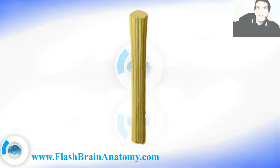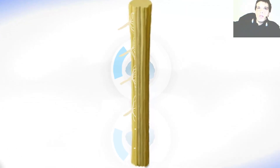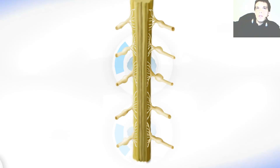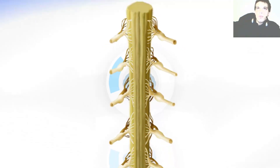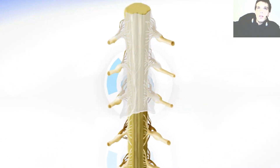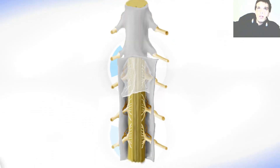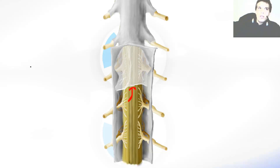Here we see the dorsal view of the spinal cord. As I mentioned, the dorsal roots of the spinal nerve come out of the dorsolateral sulcus — we cannot see the sulcus from this dorsal view. All over the roots and the spinal cord there is a thin layer of pia mater covering everything. Then comes the arachnoid mater and the dura mater. The space between the arachnoid mater and the pia mater is called the subarachnoid space.